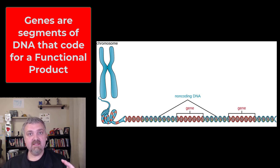So genes are segments of DNA that code for a functional product, which is usually a protein. The other non-coding DNA, I don't like to call it junk DNA. We just don't know what a lot of it does, but we are learning that non-coding DNA is very important. So that's a gene, a segment of DNA, a sequence of DNA that codes for a functional product.